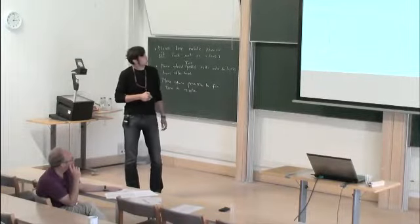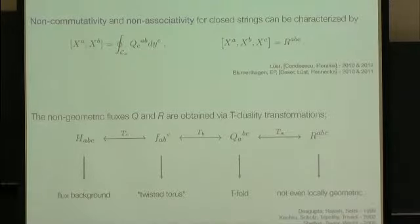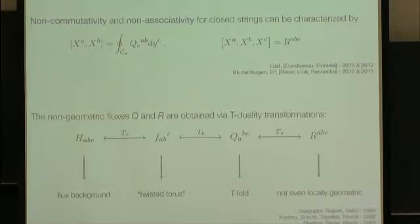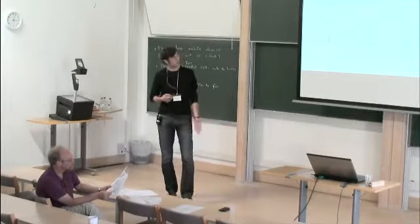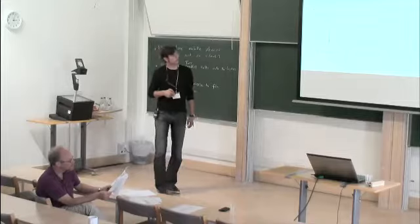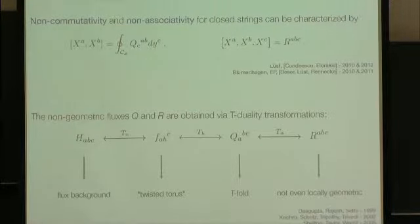These non-geometric fluxes Q and R can be obtained by applying T-duality transformations. If we start with a usual H-flux, which gives us a normal flux background on a flat torus, and apply one T-duality transformation, we arrive at something called geometric flux, and the resulting space is a twisted torus. We can apply a further T-duality transformation to arrive at Q-flux, and the resulting space is called a T-fold, where not only diffeomorphisms but also T-duality transformations are needed to glue together patches. One can apply even a further T-duality transformation to arrive at an R-flux, and these spaces are not even locally geometric anymore.